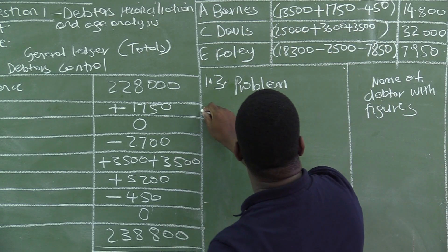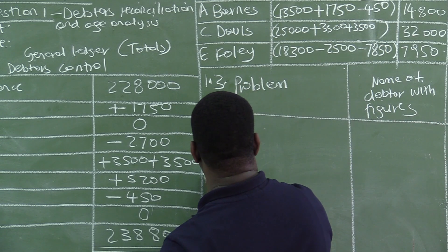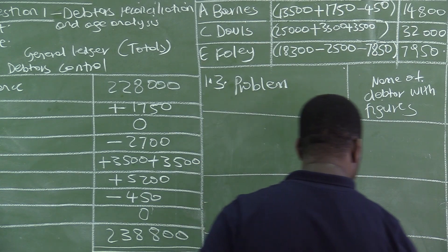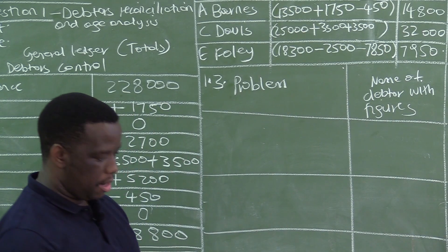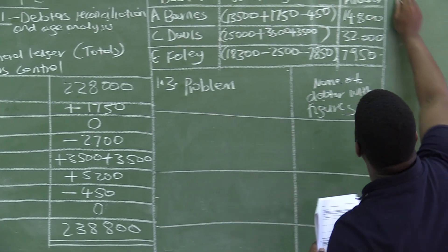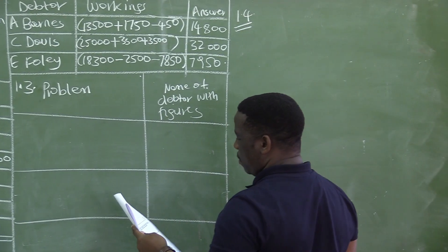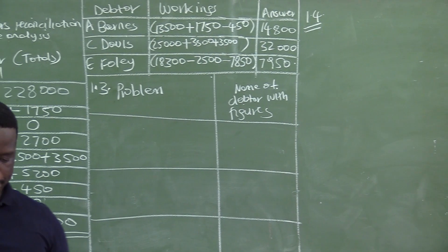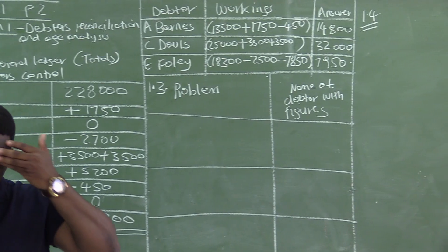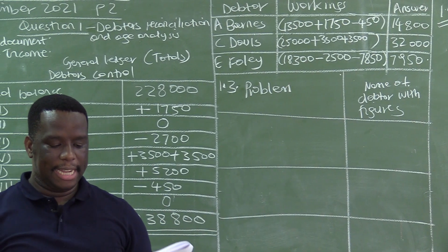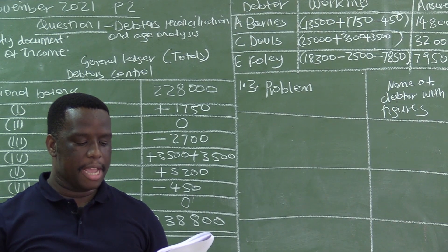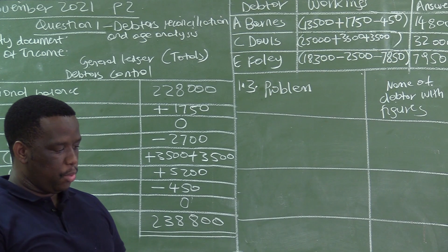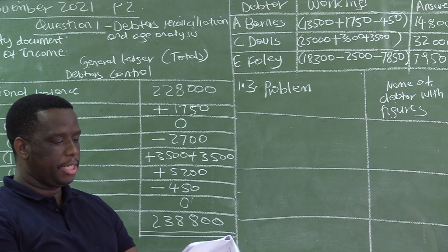You have three columns here: name of the debtor with figures — columns one, two, and three. You also have question 1.4. Question 1.3 says: refer to information C, explain three different problems highlighted by the data's age analysis, and provide the name of the debtor or the figure in each case — six marks.